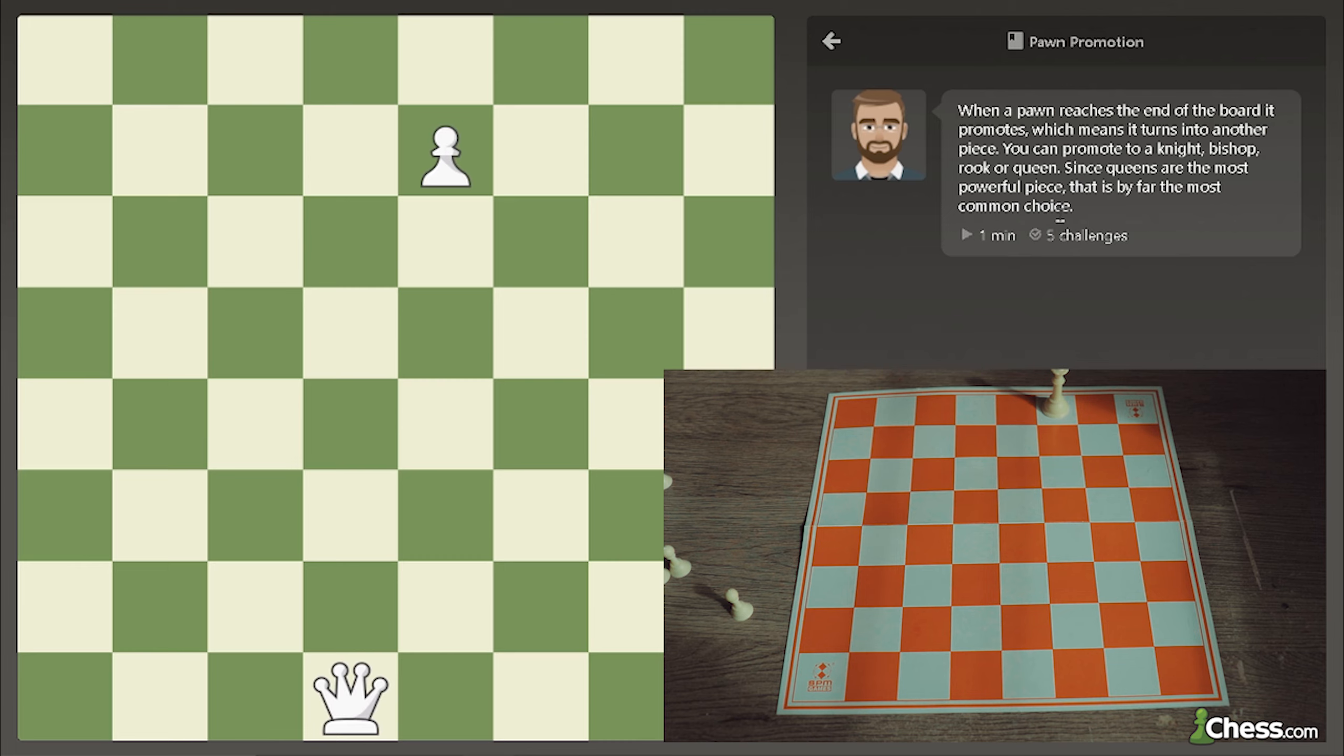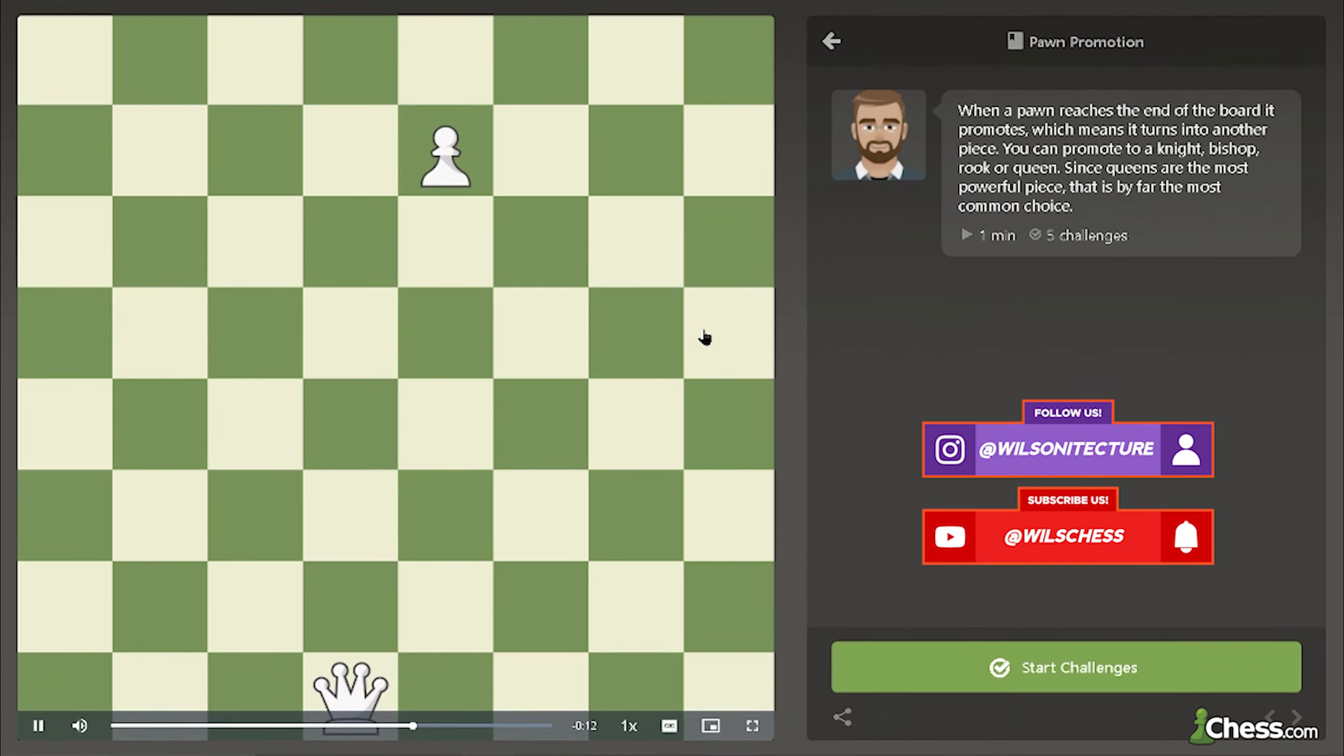Also, it does not have to be one of the pieces already captured in the game. Every pawn has the potential to be promoted into a queen. You could trade it for another queen and have two queens on the board, which is incredibly powerful.